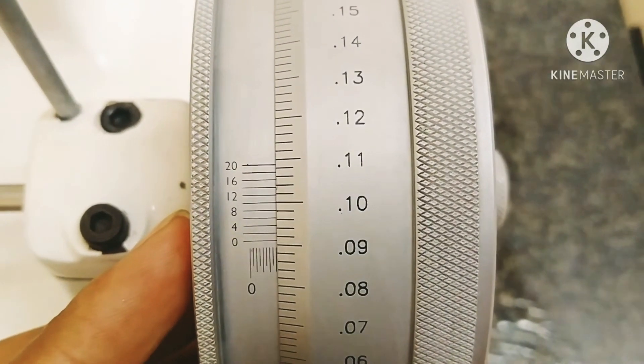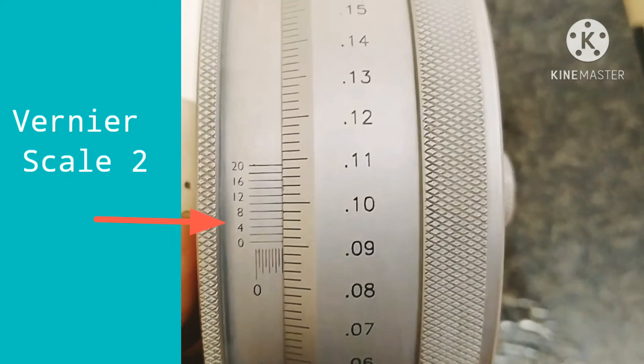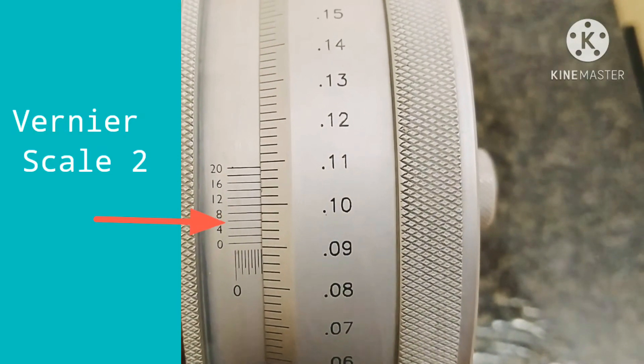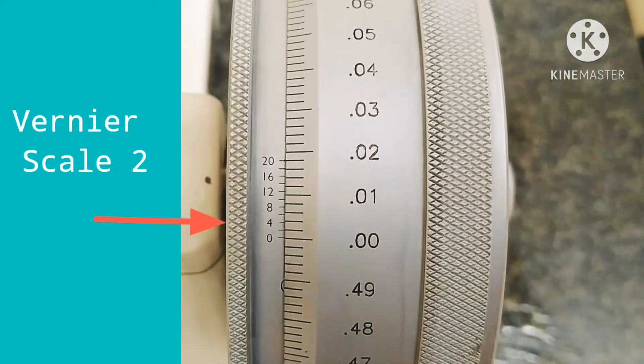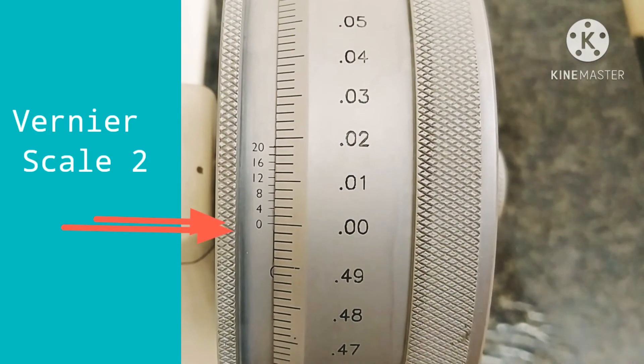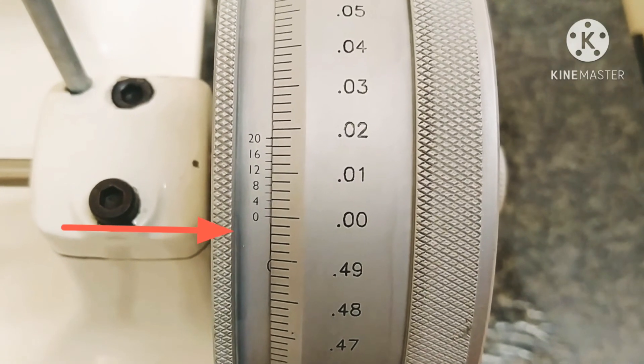You can see it is very interesting how the least count is reduced with the help of this additional vernier scale 2. Here the zero of the round scale is perfectly touching with the main scale.